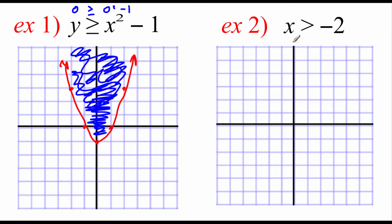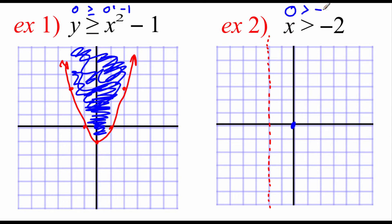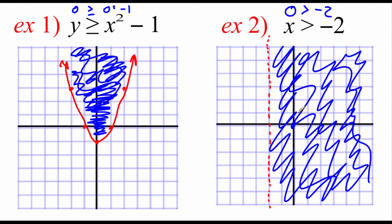For our second example, it says x is greater than negative two. This does not have an equals to symbol, so we are going to graph it using a dotted line through the x value of negative two. We pick test point zero, zero, and our inequality says zero is greater than negative two. That's a true statement, so we want to shade on the same side of the line as our point.